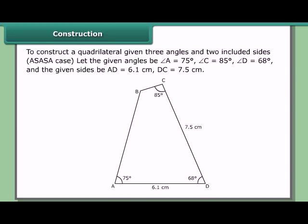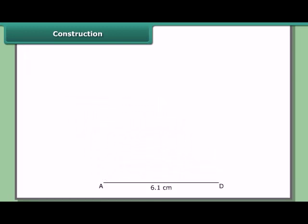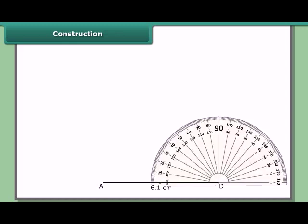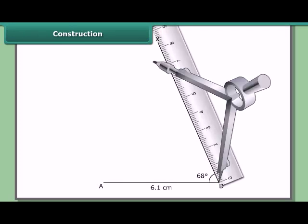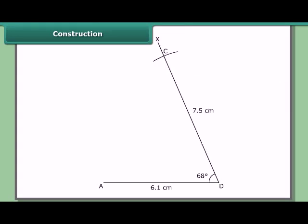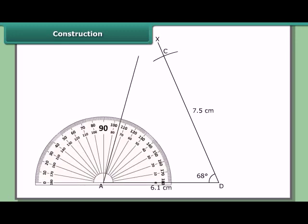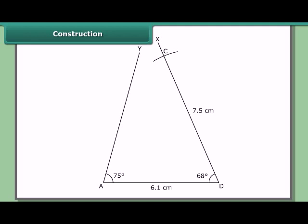We can construct the quadrilateral directly without dividing it into two triangles. Construct AD = 6.1 cm. At D, draw angle ADX = 68°. With D as center and radius 7.5 cm, cut off DC = 7.5 cm on ray DX. At A, draw angle DAY = 75°. At C, draw angle DCZ = 85°. Let the arms meet at B. ABCD is the required quadrilateral.